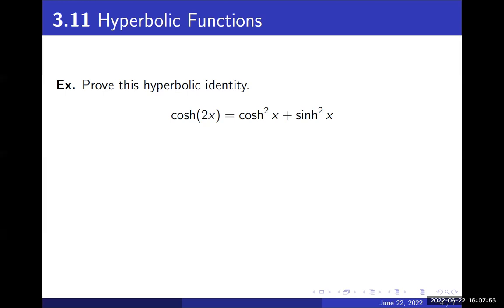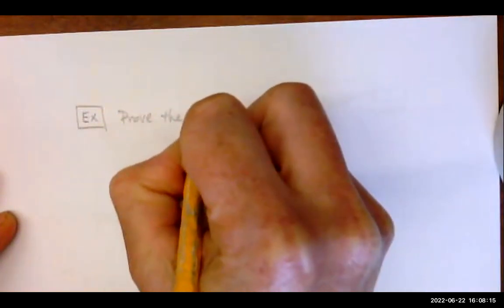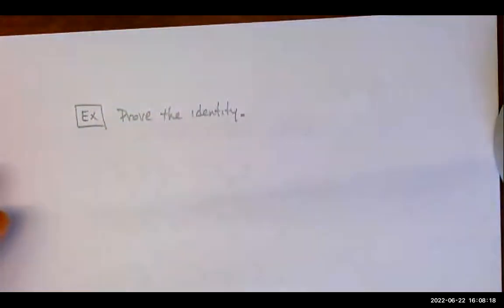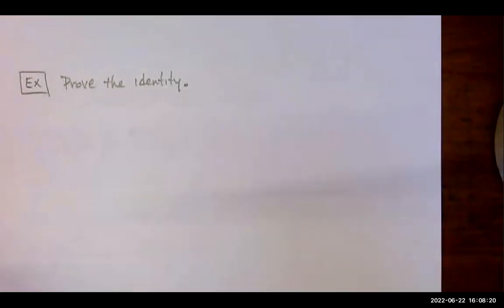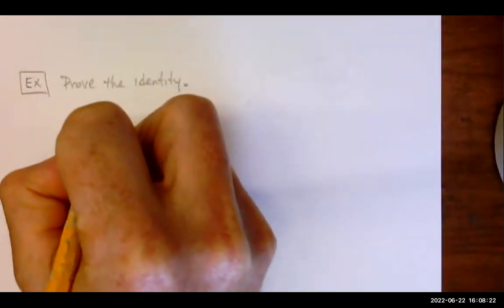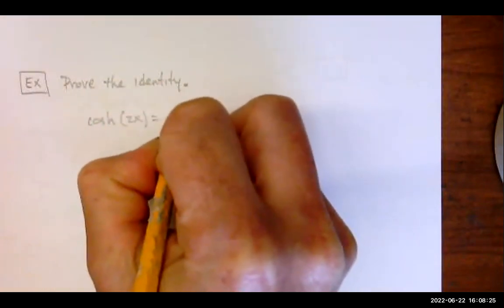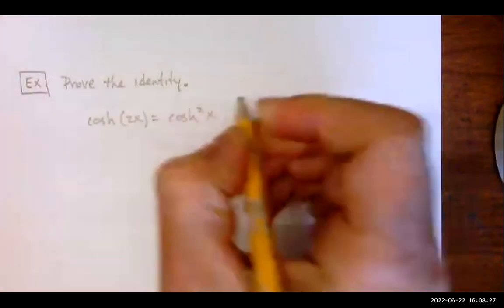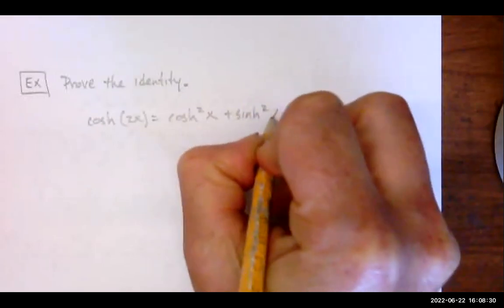So we're going to prove this identity here, that cosh 2x would equal cosh squared x plus sinh squared x. Let me jump to my paper here. Prove the identity.